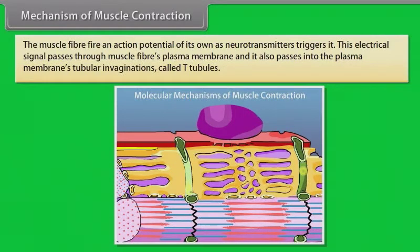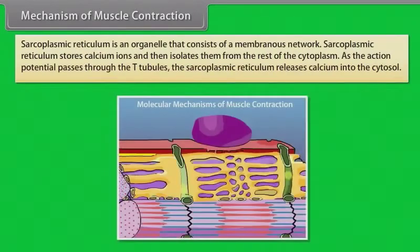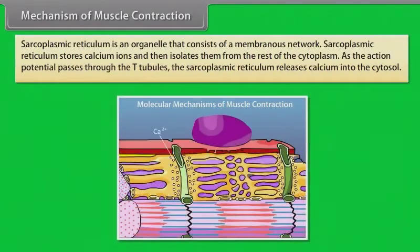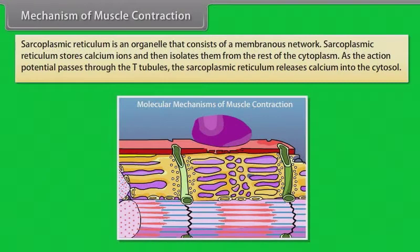The muscle fiber fires an action potential of its own as neurotransmitters trigger it. This electrical signal passes through muscle fibers and into the plasma membrane's tubular invaginations called T-tubules. The sarcoplasmic reticulum is an organelle consisting of a membranous network that stores calcium ions and isolates them from the rest of the cytoplasm. As the action potential passes through the T-tubules, the sarcoplasmic reticulum releases calcium into the cytosol.